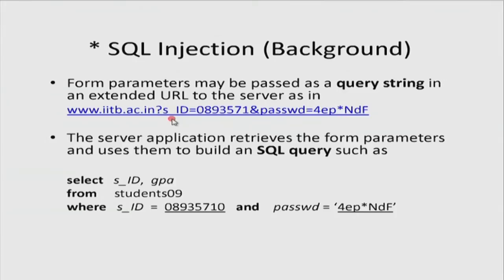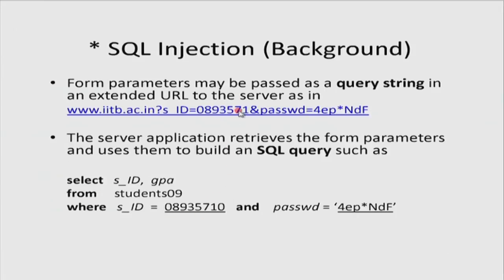With an HTTP GET request, this extended URL has all the parameters appended to it. The server software takes this and uses it to complete a query. The standard template is a basic SQL query: select columns — say student_id and GPA — from a students table where the student_id matches this and the password matches this. The server-side software extracts these two values from the HTTP request and puts them into the prepared SQL query, which is then submitted to the SQL engine for execution.